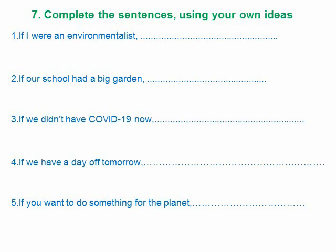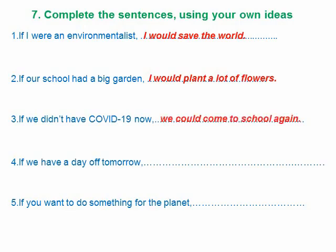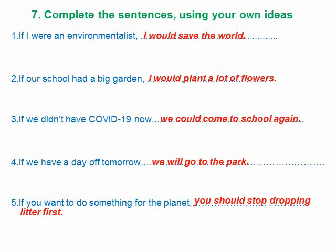Number one: If I were an environmentalist, I would save the world. Number two: If our school had a big garden, I would plant a lot of flowers. Number three: If we didn't have COVID-19 now, we could come back to school again. Number four: If we have a day off tomorrow, we will go to the park. And last: If you want to do something for the planet, you should stop dropping litter first.